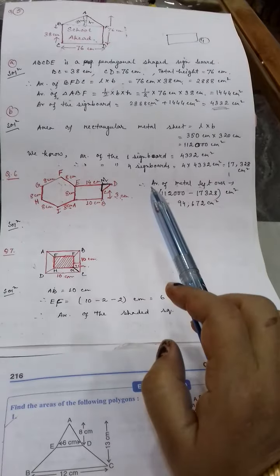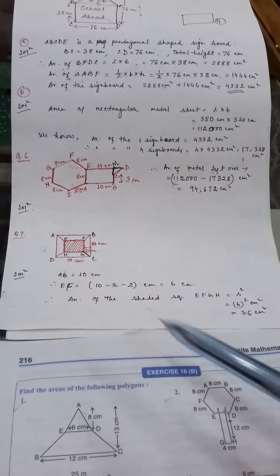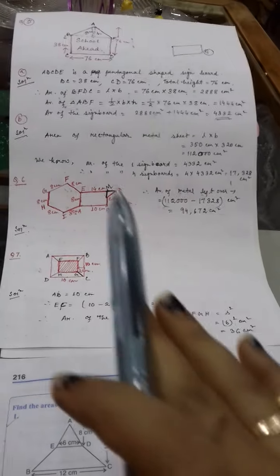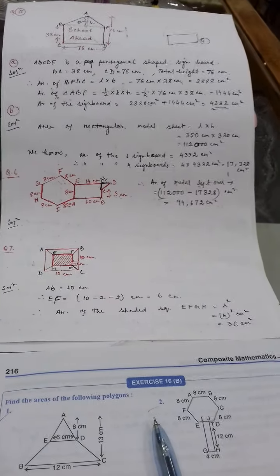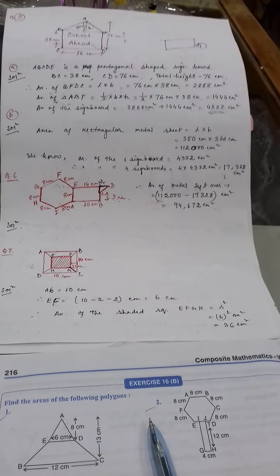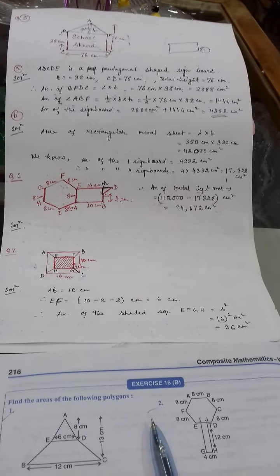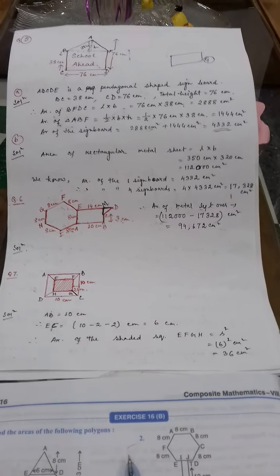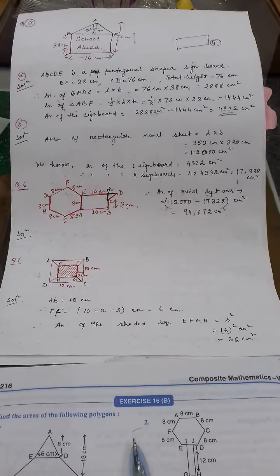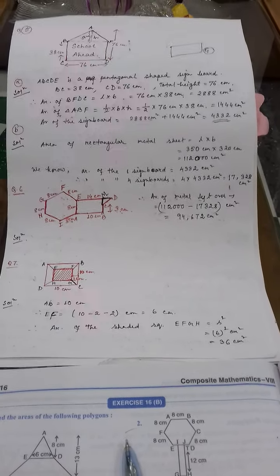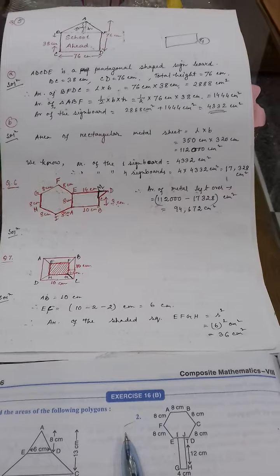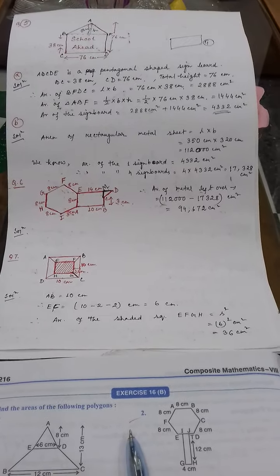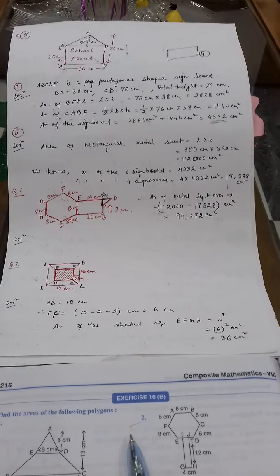So these are the sums — you have to solve polygons in this way. From exercise 16B I have done all the solutions. Do solve all those sums in your copy in a systematic way. I think it is clear to you — do it by yourself. Practice the formulas, otherwise you won't be able to find the answers. In the next video I will show some additional sums, so do practice and complete your work.